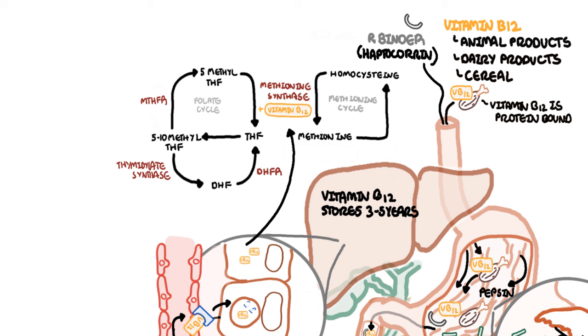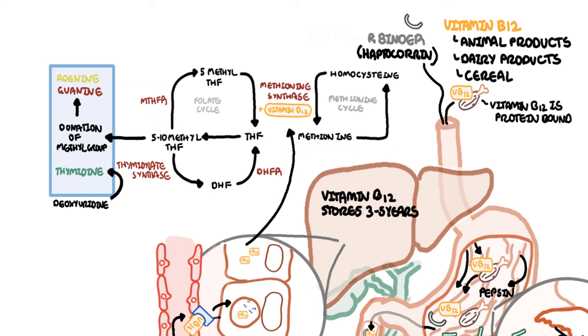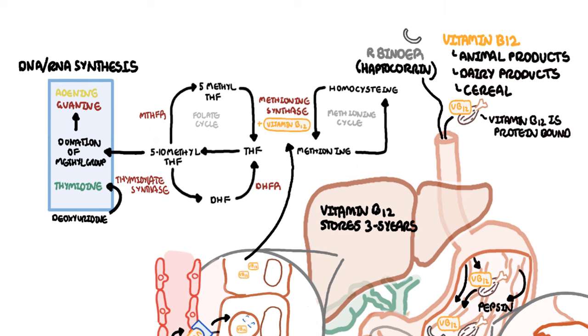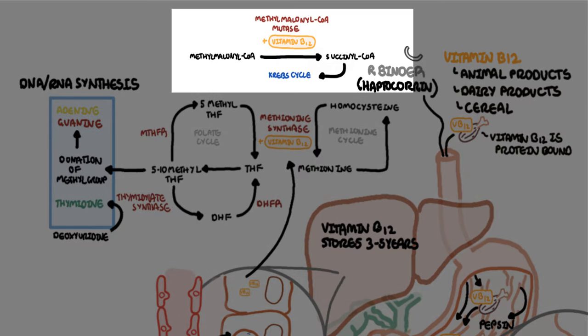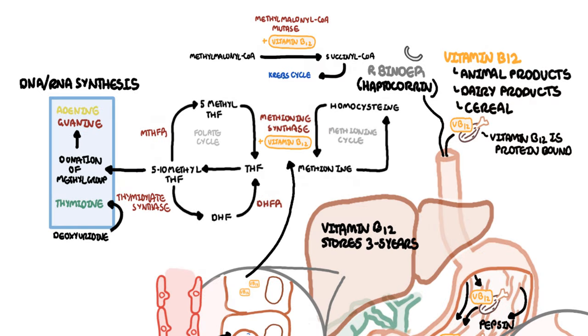The folate cycle is important for DNA and RNA synthesis, as they donate methyl groups to form nucleotides adenine and guanine, as well as drive a reaction to synthesize the nucleotide thymidine. Vitamin B12 specifically is a cofactor in the conversion of methylmalonyl-CoA to succinyl-CoA, a reaction that occurs in the mitochondria catalyzed by methylmalonyl-CoA mutase. Methylmalonyl-CoA (MMA) and homocysteine will be elevated if someone has vitamin B12 deficiency, because they are unable to drive both these enzymatic reactions.